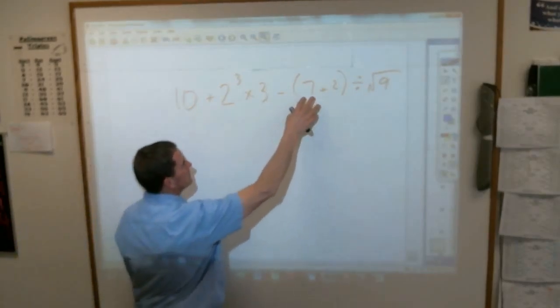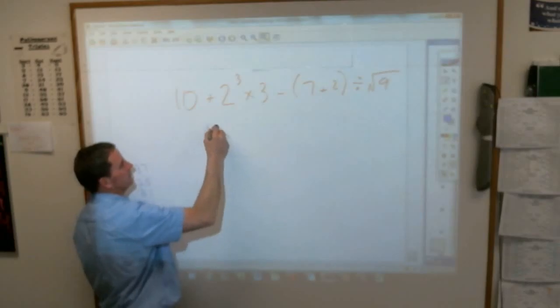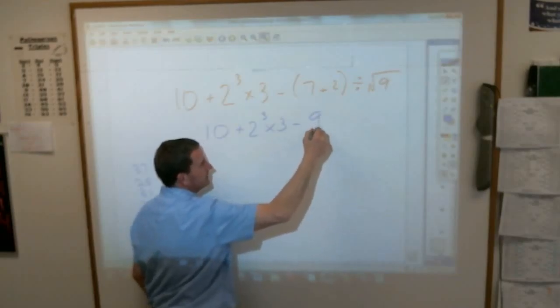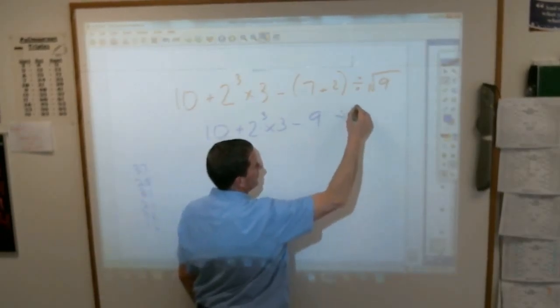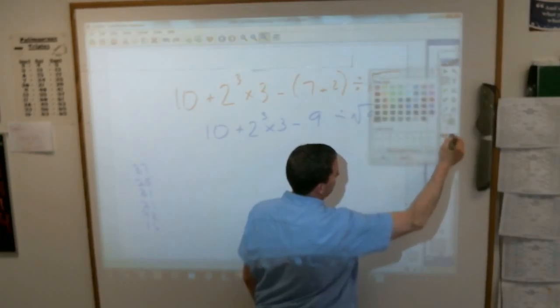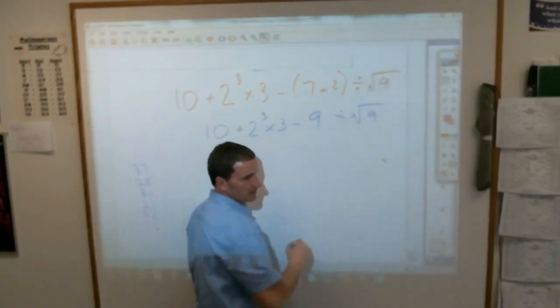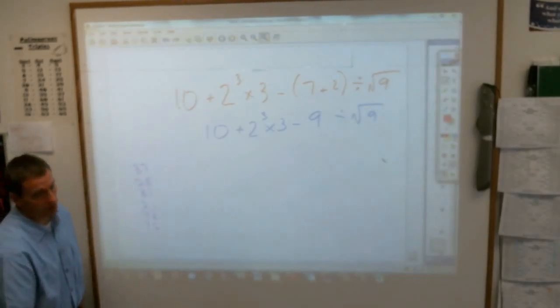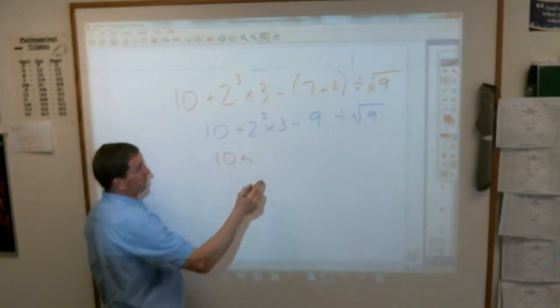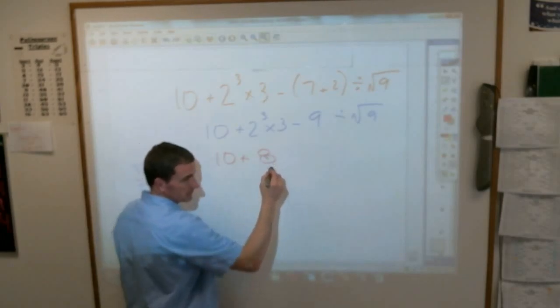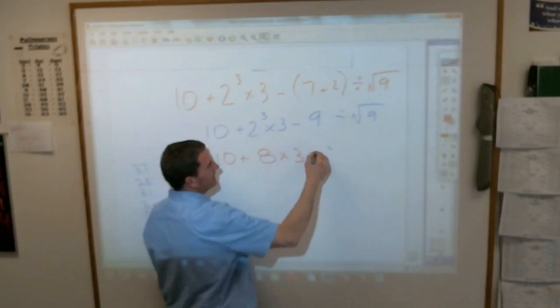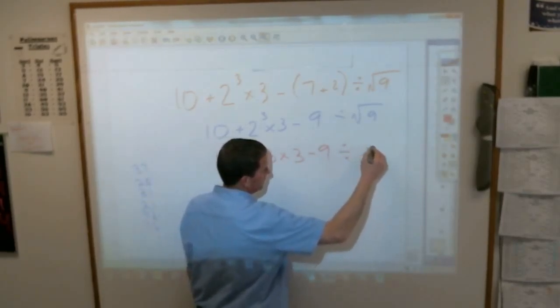Let's follow the order of operations. First thing to do is parentheses. So we'll see where we lost some of you. 10 plus 2 cubed times 3 minus 7 plus 2 is 9, divided by the square root of 9. Who's still in the game? How many people at least got the first step down right? All right. Next thing we're supposed to do are exponents and roots. So 10, 2 to the third power is not 6. I hope you didn't put that. It's 2 times 2 times 2, which is 8. How many people did we lose because of that? Good.